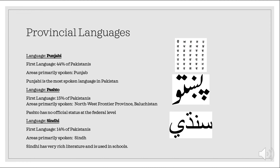On this slide, I've actually listed the top three most spoken languages in Pakistan, those being the previously mentioned Punjabi, which is spoken by 44% of Pakistanis as their first language. In accordance with the previous map that we saw, it is located in the region of Punjab — that's where it originated. An interesting fact about Punjabi is that although Punjab is a small portion of Pakistan, it is the most spoken language in Pakistan itself.